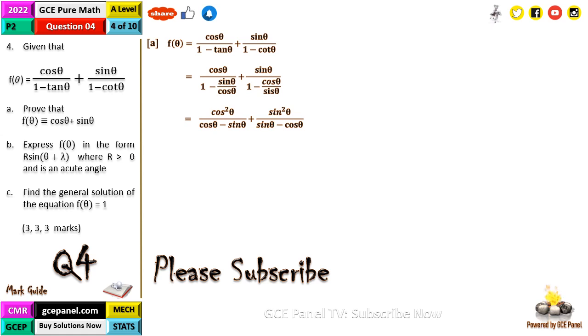So multiply numerator here by cosθ, we are going to have cosθ all that over cosθ minus sinθ, plus here we will have sinθ all that over 1 minus cosθ over sinθ. We should give us sin²θ over sinθ minus cosθ.